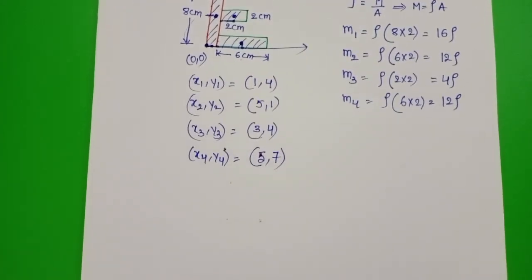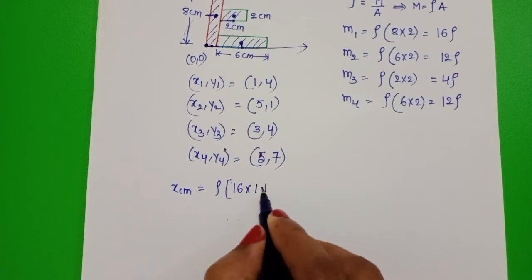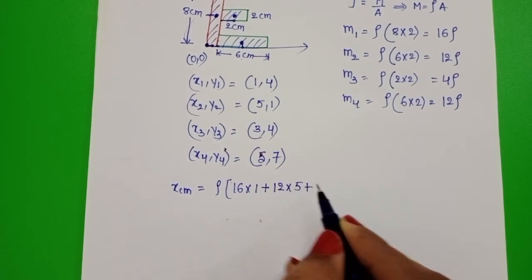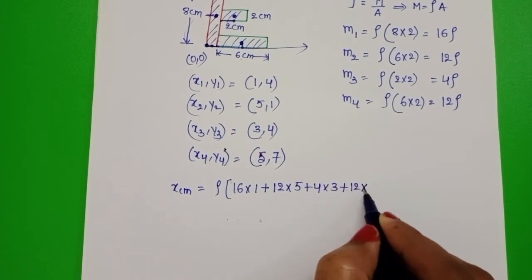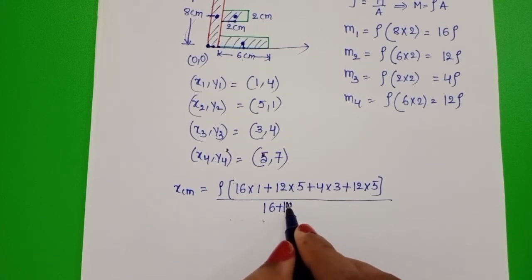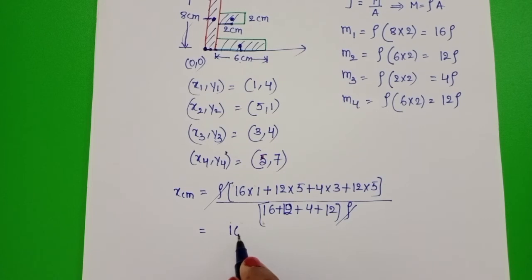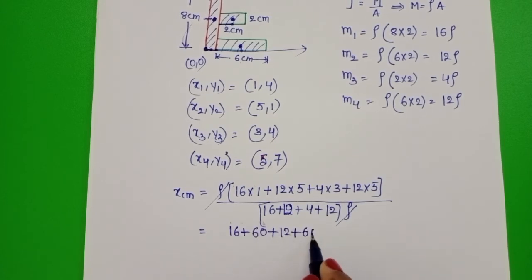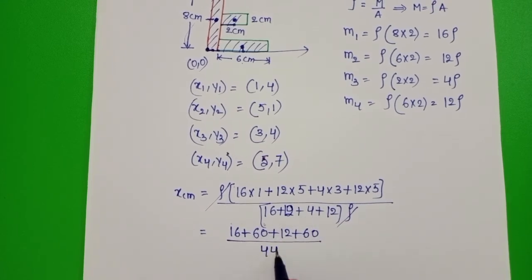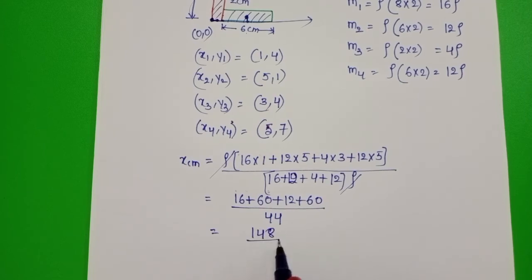So now find out the position of center of mass of the given letter E. Xcm equals M1 x1 plus M2 x2 plus M3 x3 plus M4 x4 by total mass. M1 is 16 rho, take rho common. 16 into x1 which is 1, plus M2 12, x2 is 5. M3 4, x3 is 3. M4 12, x4 is 5. By total mass, 16 plus 12 plus 4 plus 12 into rho. Rho gets cancelled. 16 plus 60 plus 12 plus 60 by total mass 44, which is 148 by 44.